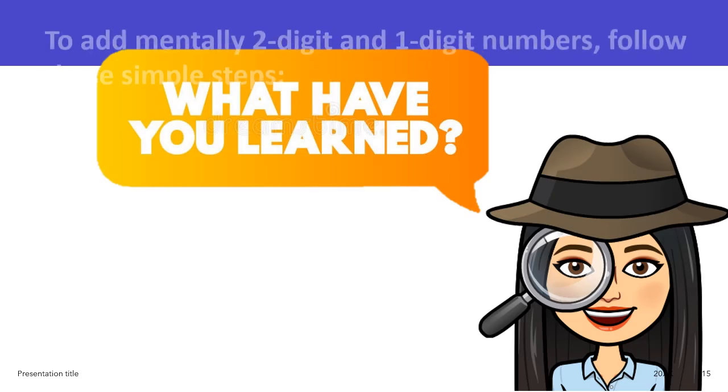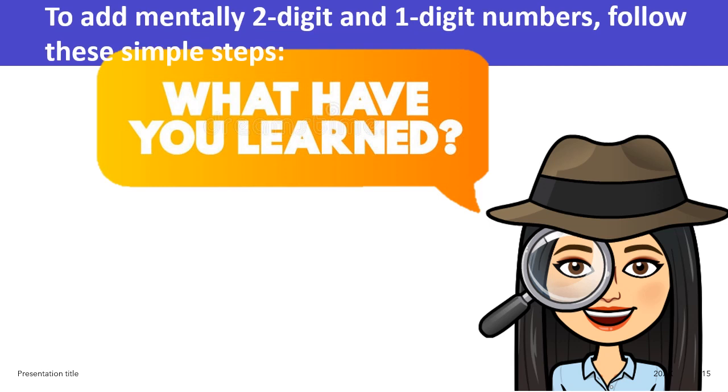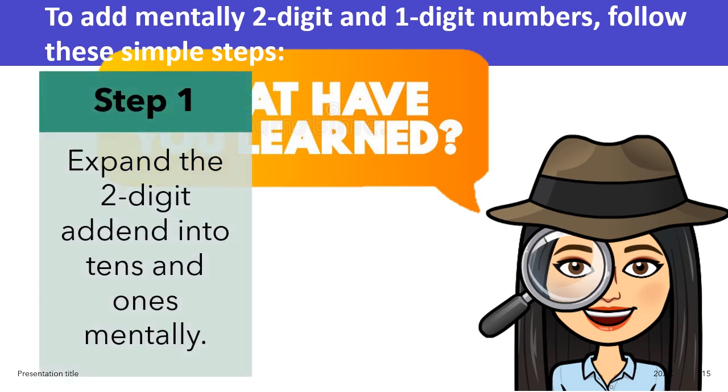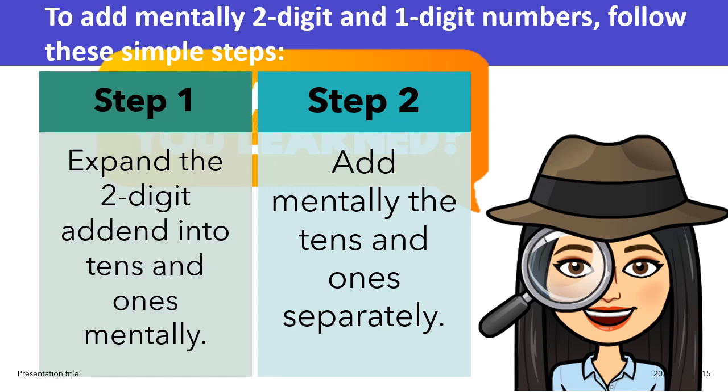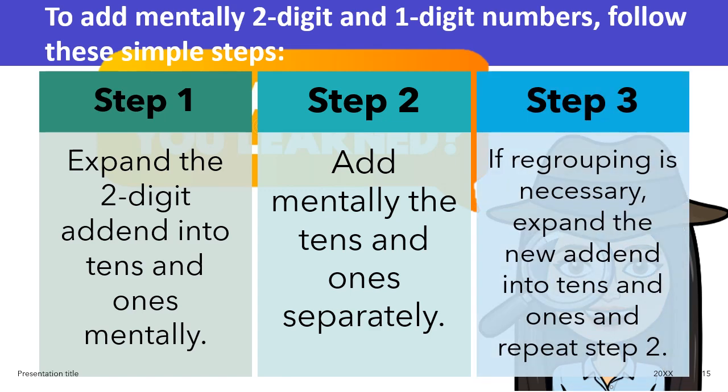What I have learned: To add mentally two-digit and one-digit numbers, follow these simple steps. Step 1, expand the two-digit addend into tens and ones mentally. Add mentally the tens and ones separately. If regrouping is necessary, expand the new addend into tens and ones and repeat step 2.